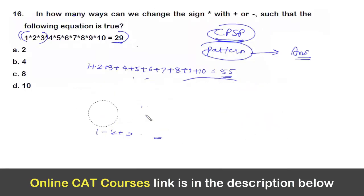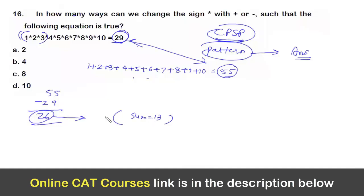So that means now I have understood the pattern. What pattern? That if the sum is 55 here with all the plus signs, and here it is 29, what is the difference? It is 55 minus 29, which is 26. So a difference of 26 will only happen when I take those numbers whose sum is equal to 13 with minus sign.